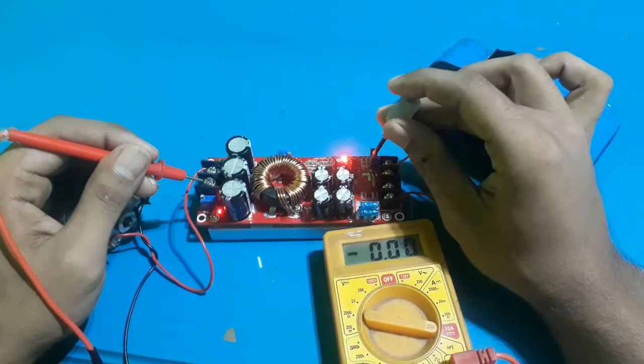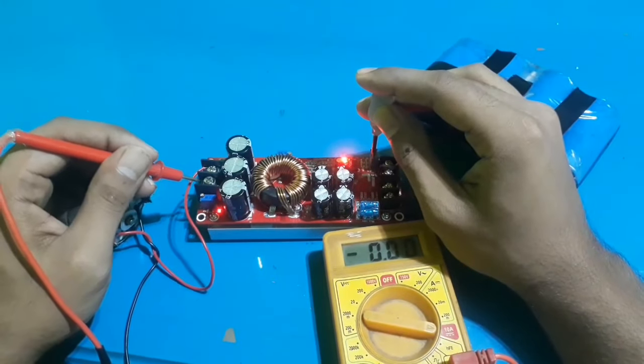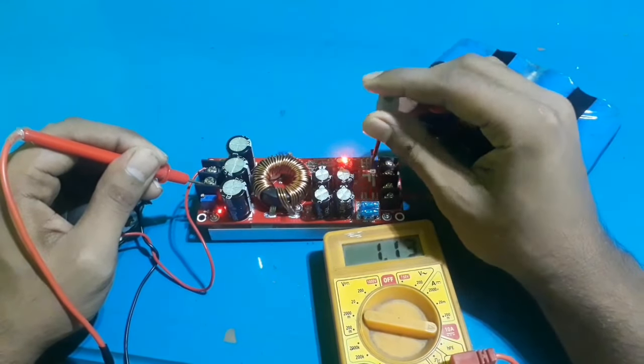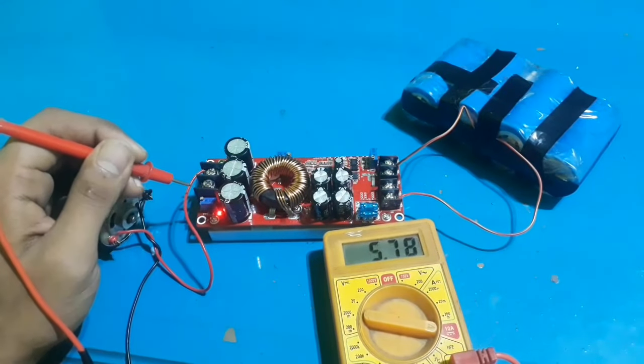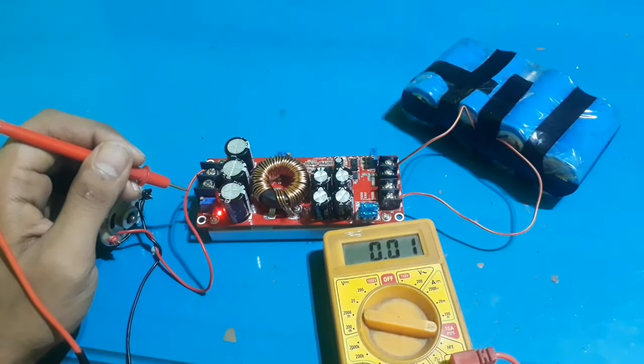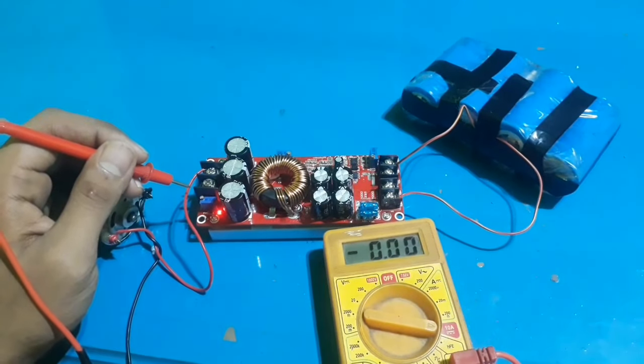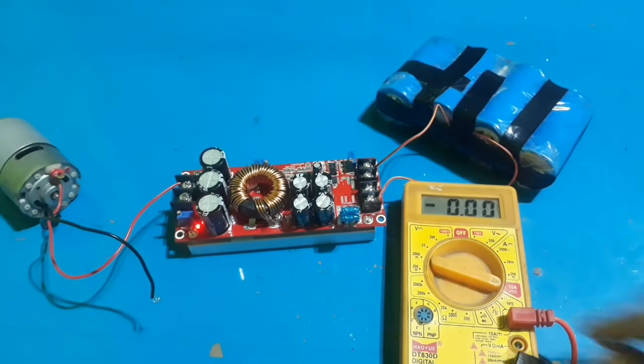Now I will rotate anti-clockwise until the LED goes off. When the LED turned off, the device started boosting power and the motor runs at maximum current.